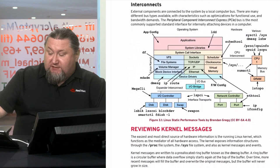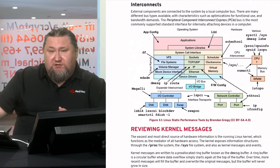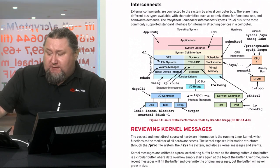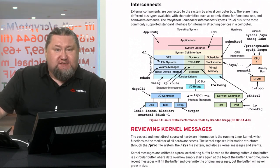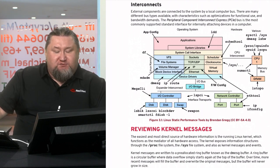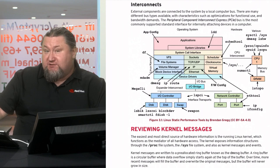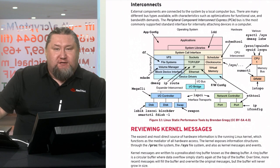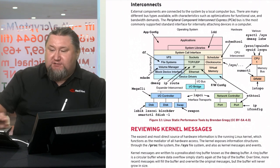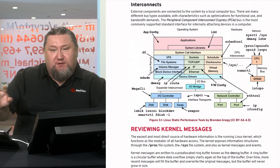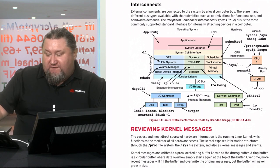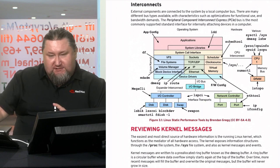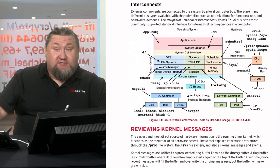It's important to understand that different architectures have different interconnects — the way components are connected to each other. Standard PCs may have very slow, cheap manufacturing-process interconnects, while servers where performance is absolutely important may have very sophisticated, expensive interconnects allowing transfer of large amounts of data between components very efficiently. That's the key difference between servers and desktop systems.